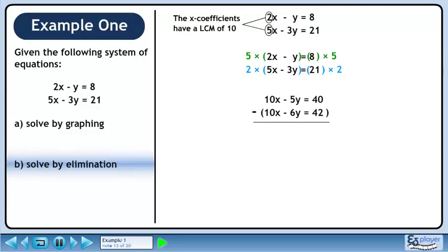We can either add or subtract to eliminate x. In this case, subtraction is required to make the x terms vanish. 10x minus 10x is 0, so the x term is gone. Minus 5y minus minus 6y is 1y and 40 minus 42 is minus 2.